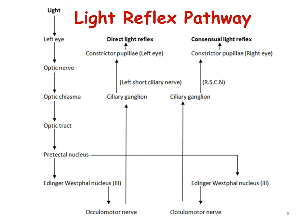The same light reflex pathway can be explained with a flow chart. Say light is directed into the left eye. This information or the impulses are carried along the optic nerve, through the optic chiasm, through the optic tract, through the pre-tectal nucleus — that's where the first order neuron ends. And then the second order neuron carries the impulses to the Edinger-Westphal nucleus of both sides, the left as well as the right.